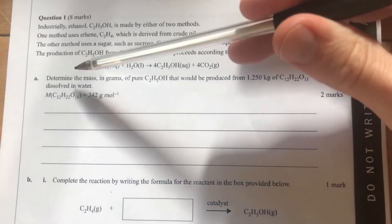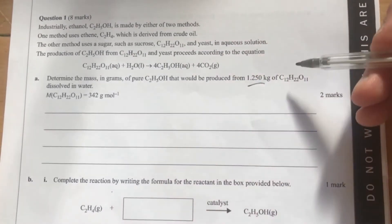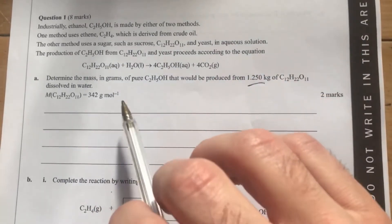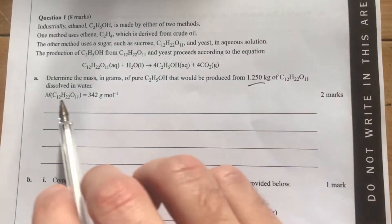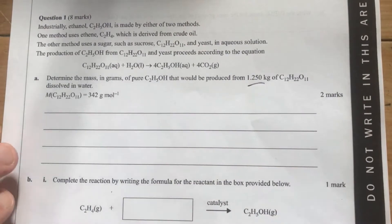The first question asks us to determine the mass in grams of pure ethanol that would be produced from 1.25 kilograms of sucrose dissolved in water. So obviously we're given the amount of sucrose, and we need to find out our ethanol. This is going to be a stoichiometry question.